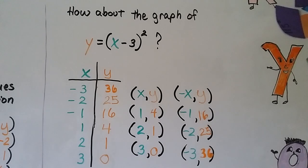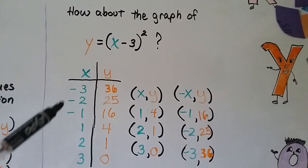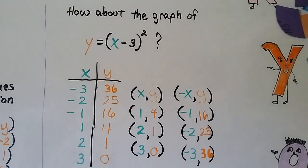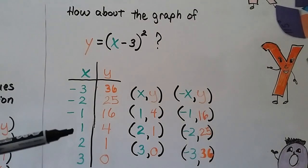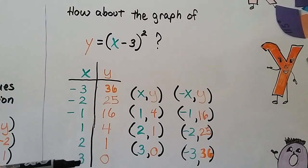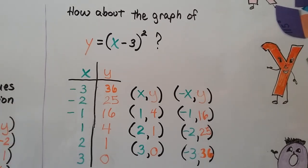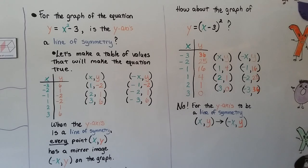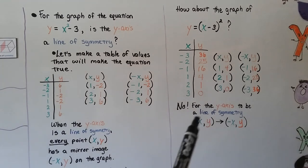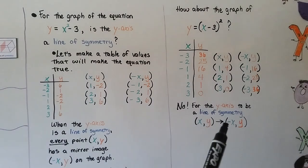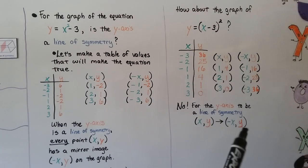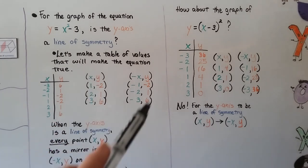How about the graph of y = (x − 3)²? We need to make a table of values that'll make this equation true. But if you look at the x and y values — even though we've got positive 1, 2, 3 and the inverse of −1, −2, −3 — look what's happening to the y values: it's not working out. The y's are supposed to stay the same. So no — for the y-axis to be a line of symmetry, we need inverse x values to produce the same y values, and they don't here.